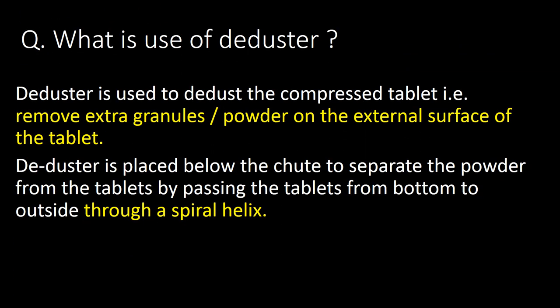What is the use of a de-duster? A de-duster is used to de-dust compressed tablets — that is, to remove extra granules or powder from the external surface of the tablet. The de-duster is placed below the chute to separate the powder from tablets by passing them from bottom to outside through a spiral helix.